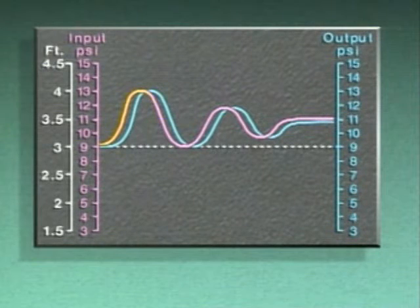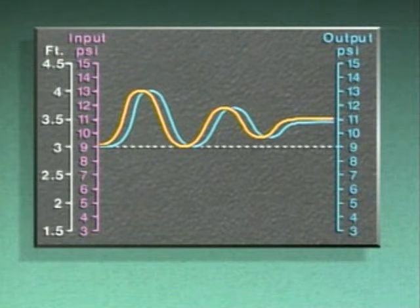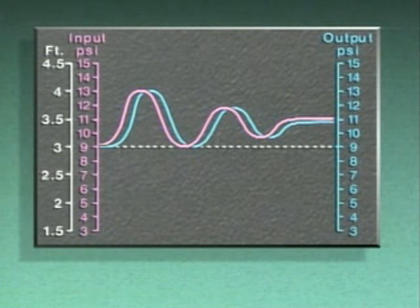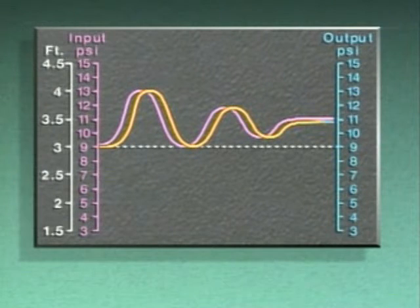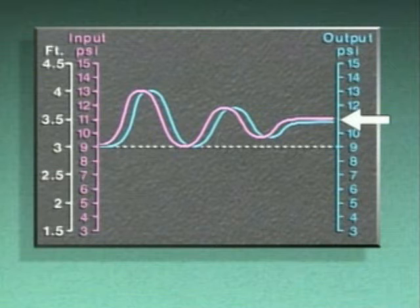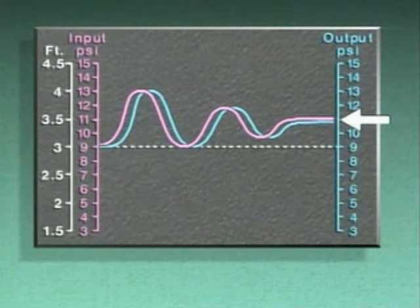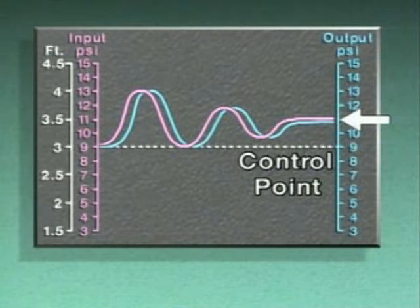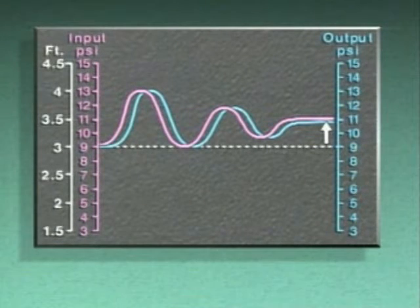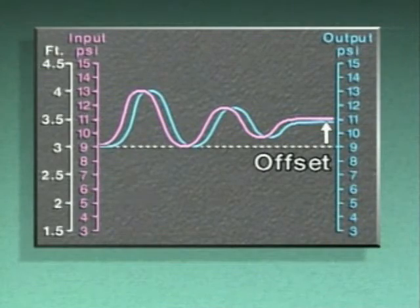That's because the input signal to the controller increased, then stayed high because of the continual disturbance. As a result, the proportional output signal stayed high as well. The higher steady state value that resulted, that is, the higher level that's represented by the input signal, is called the control point. The difference between the variable's control point and its original set point is called offset.